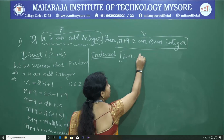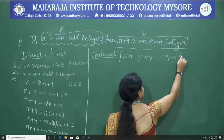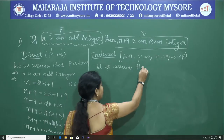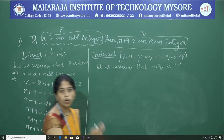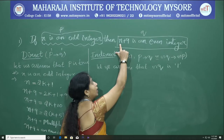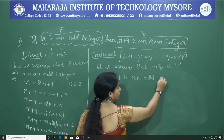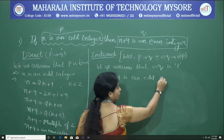For the indirect proof, we use the fact that P conditional Q is logically equivalent to negation Q conditional negation P. We assume negation Q is true — that is, n + 9 is not an even integer, meaning n + 9 is an odd integer. An odd integer can be written as 2k + 1 where k belongs to the set of all integers.